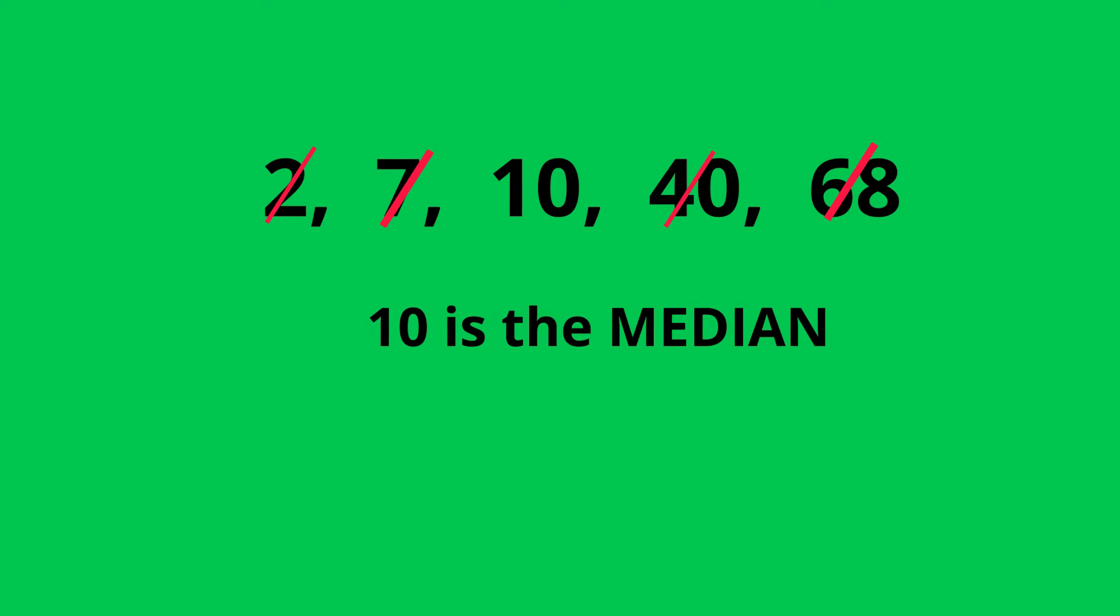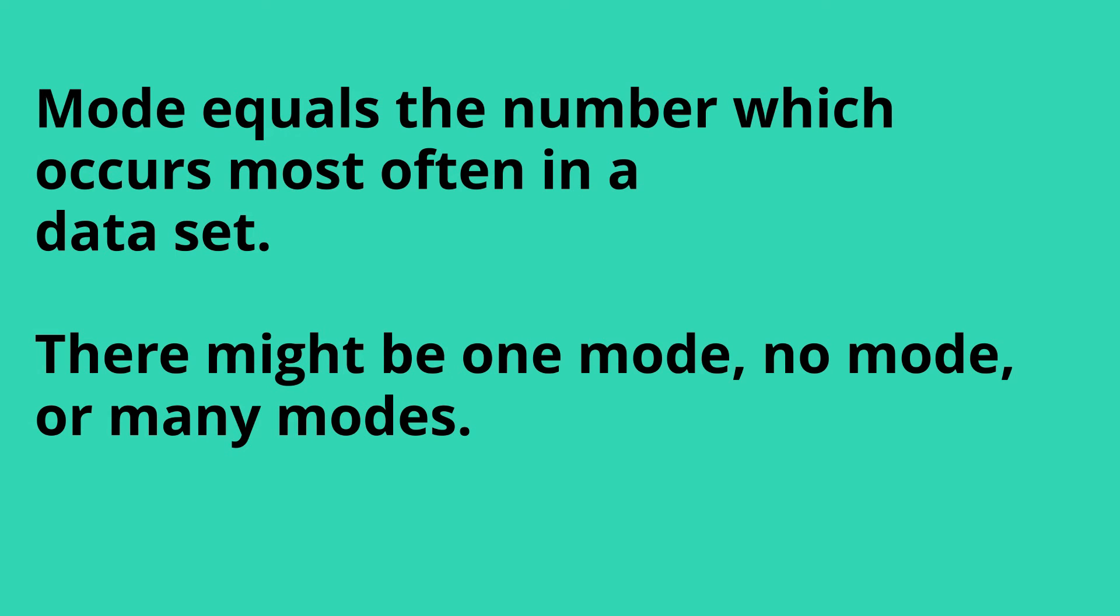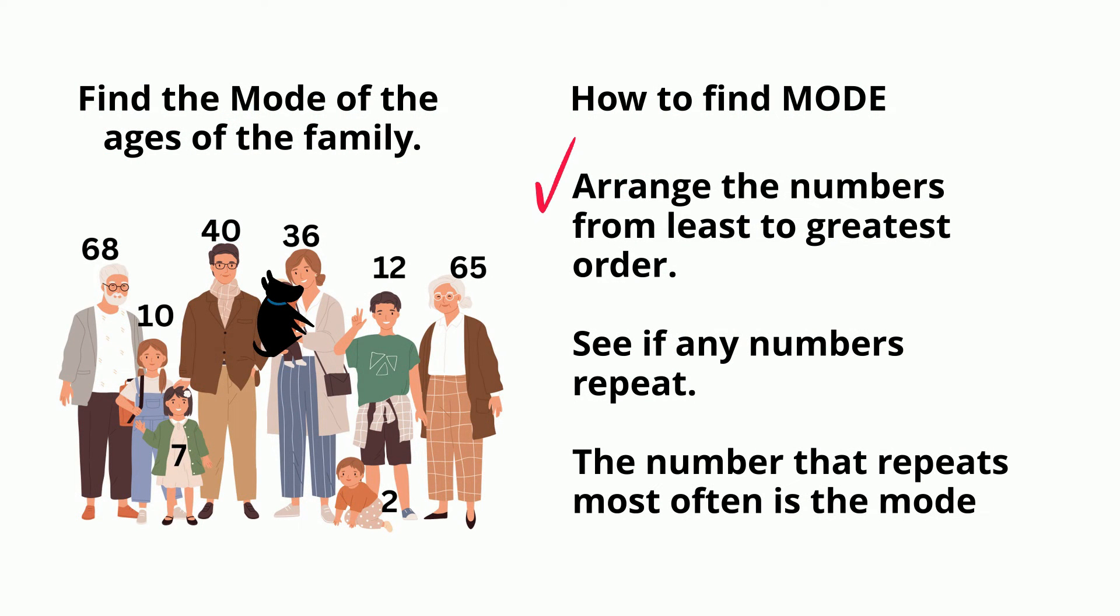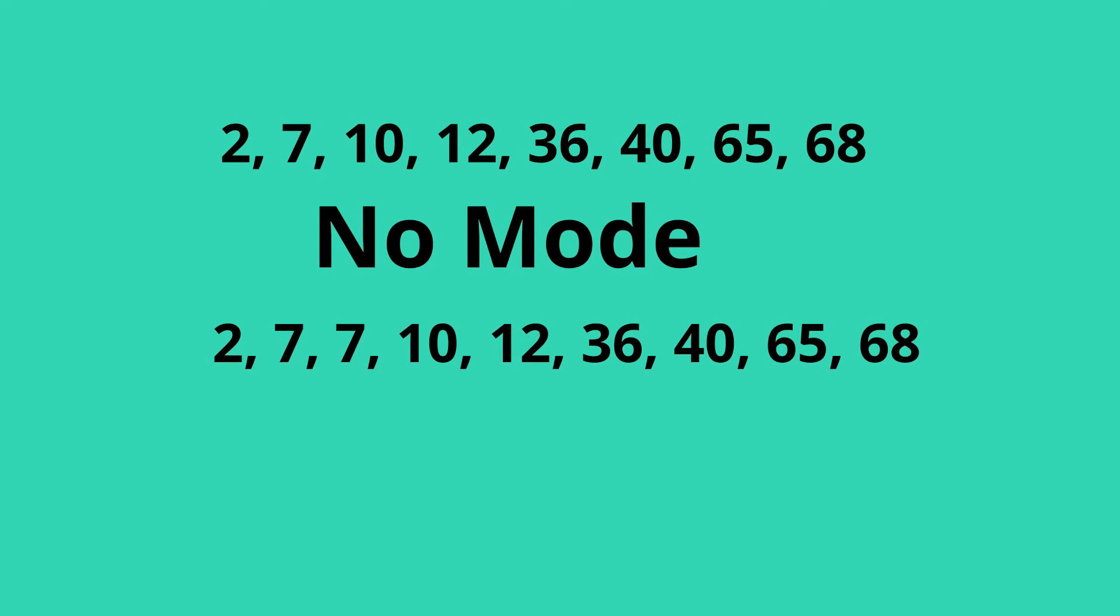Mode equals the number which occurs most often in a data set. There might be one mode, no mode, or many modes. Arrange the numbers from least to greatest order, and then see if any numbers repeat. The number that repeats most often is the mode. So what's the mode of the family? Let's arrange from least to greatest. There are no numbers that repeat, so we have no mode. If you had this, then 7 would be the mode.